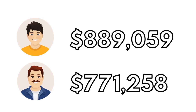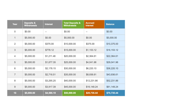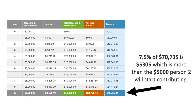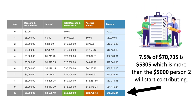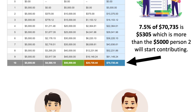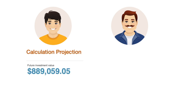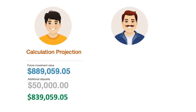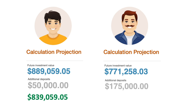So here's the difference — not as much as with a 10% return, but person one still ends up with more money. For person one, at the end of those 10 years the balance is $70,735, and 7.5% of that is $5,305 — again more than the $5,000 person two starts contributing. Person one ends up contributing just $50,000 to reach $889,000, meaning their portfolio growth was $839,000. Person two contributed $175,000 with a portfolio growth of $596,000.